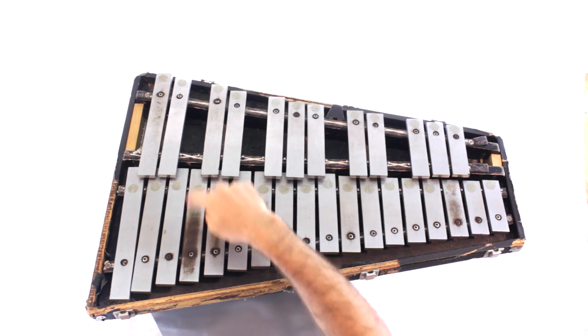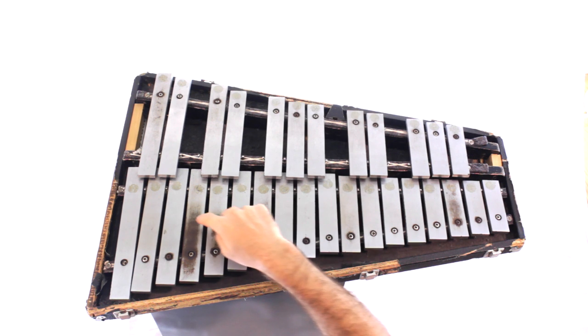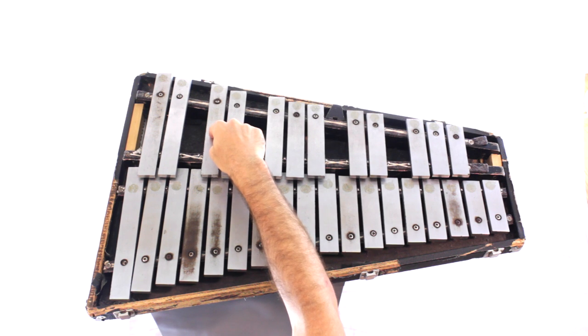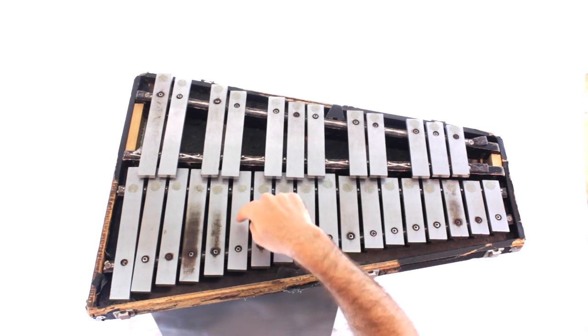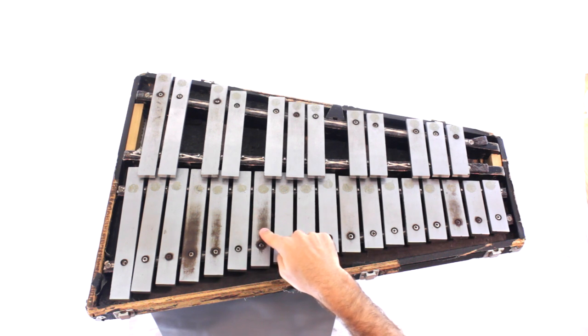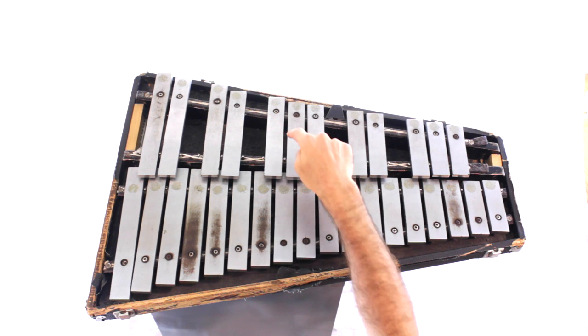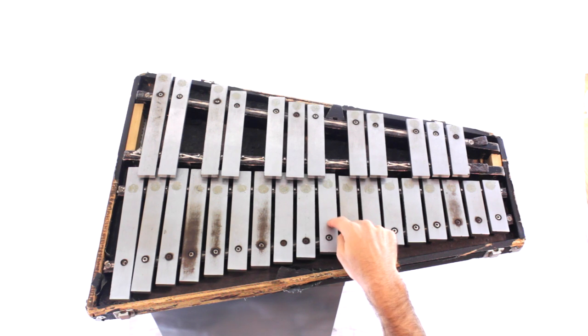Take your finger and we're going to point to each note and say its name, going up and then going down. Ready, go. C, C sharp, D, D sharp, E, F, F sharp, G, G sharp, A, A sharp, B, C.